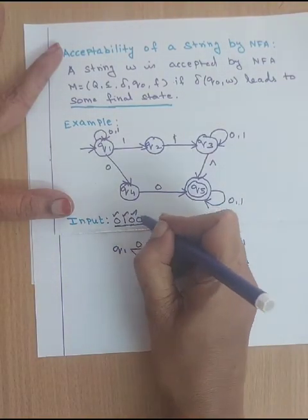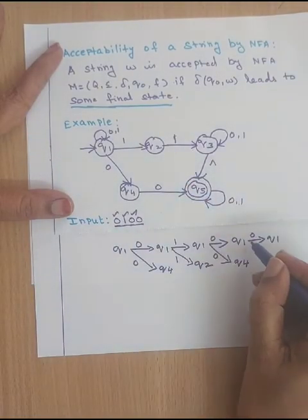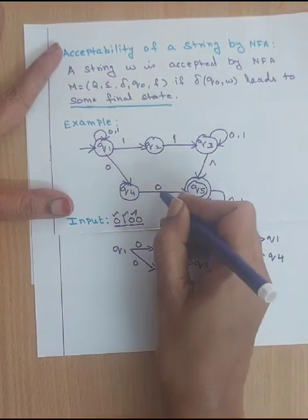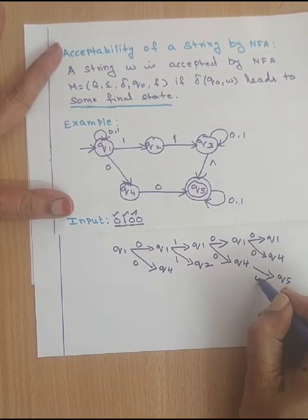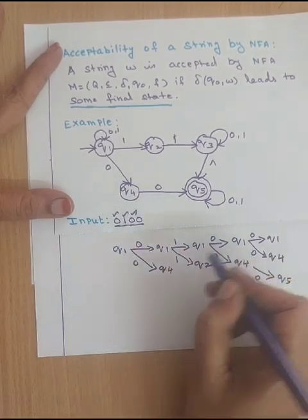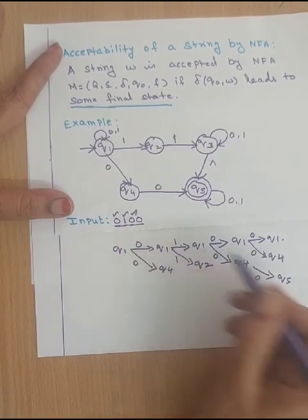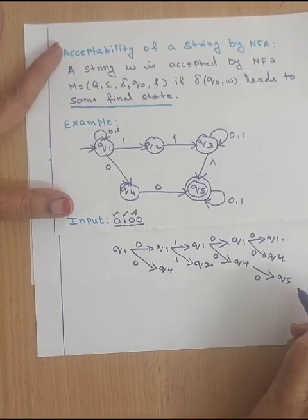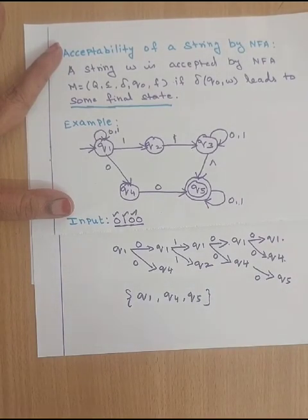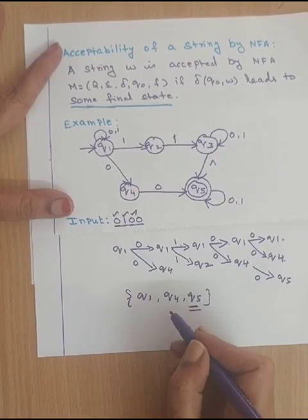The remaining digit is 0. Q1 on 0 again goes to Q1 as well as Q4. We also check Q4 on 0 — Q4 on 0 goes to Q5. So now we have reached the final state Q5. According to this input string 0100, we have three terminating states: Q1, Q4, and Q5. According to the definition, if it reaches some final state, then it is considered acceptable. Q5 is the final state and Q5 is available here. So this string is acceptable by the NFA.